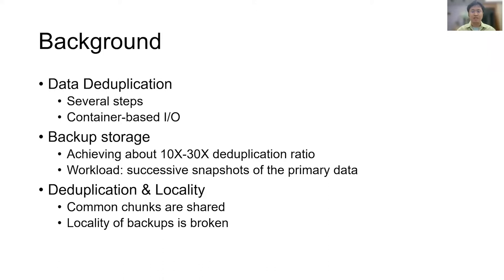Backup storage is one of the primary use cases of deduplication and could achieve a high deduplication ratio. It is because the workloads of backup storage usually are successive snapshots of the primary data. Deduplication reduces storage costs by allowing workloads to share their common chunks, but this kind of sharing destroys the locality of workloads, which results in the fragmentation problem.